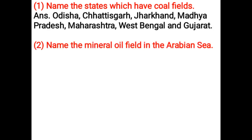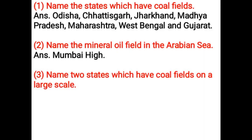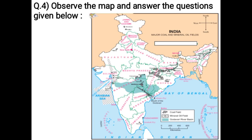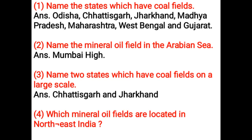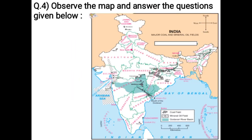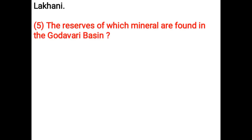Name the mineral oil field in the Arabian Sea — Mumbai High. Name two states which have coal fields on a large scale — Chhattisgarh and Jharkhand. Which mineral oil fields are located in North East India? Makkum, Digboy, Narkatia, Nunmati, Lakkani.